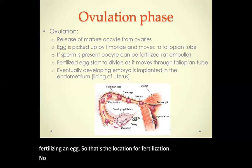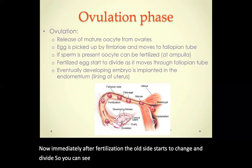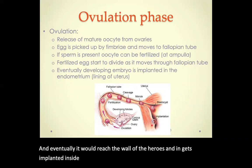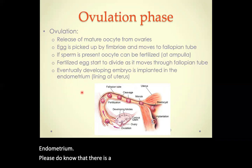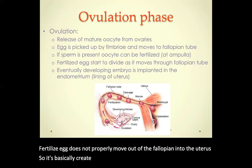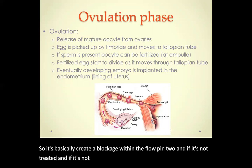Immediately after fertilization, the oocyte starts to change and divide, eventually reaching the wall of the uterus and implanting in the inner lining, the endometrium. Note that there is a condition called ectopic pregnancy, where the fertilized egg does not properly move out of the fallopian tube into the uterus. This creates a blockage, and if untreated, it can rupture the fallopian tube, cause internal bleeding, and lead to death.